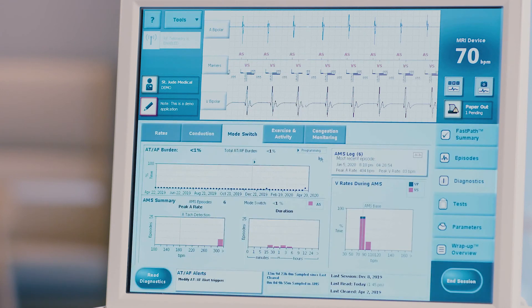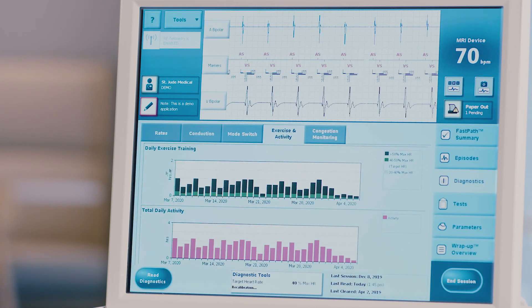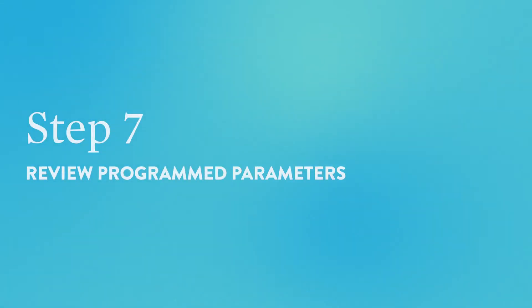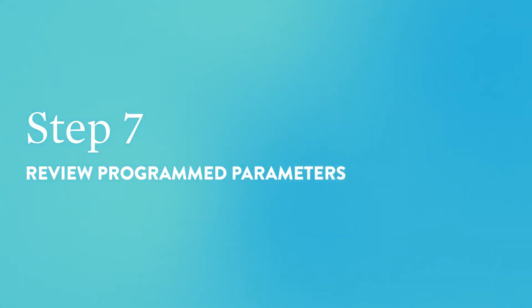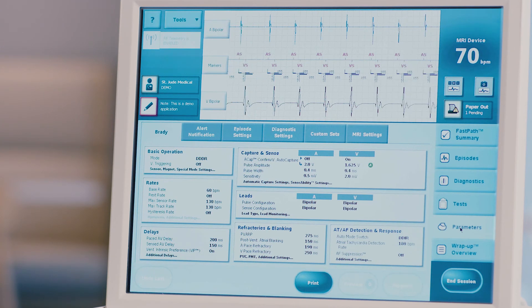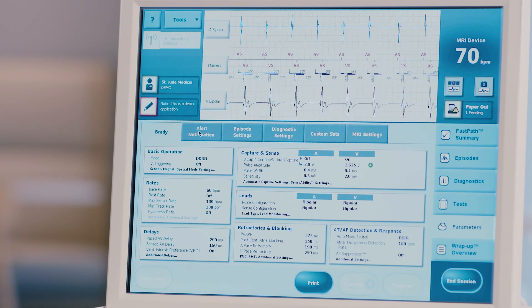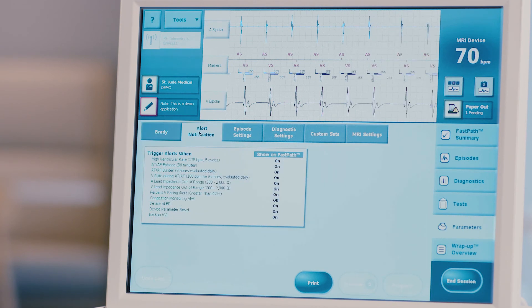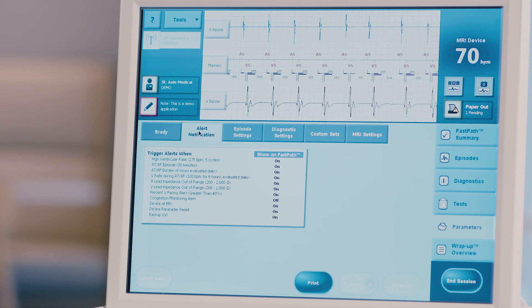Press the exercise activity tab at the top of the screen. Evaluate the patient's activity levels if necessary. Step 7: Review programmed parameters. Press the parameters tab on the right hand side of the screen. The Brady tab will appear first. All pacing parameters can be viewed or changed through this screen. Press the alert notification tab at the top of the screen. Here you can review the program settings for the FastPass summary alerts and patient notification alerts.